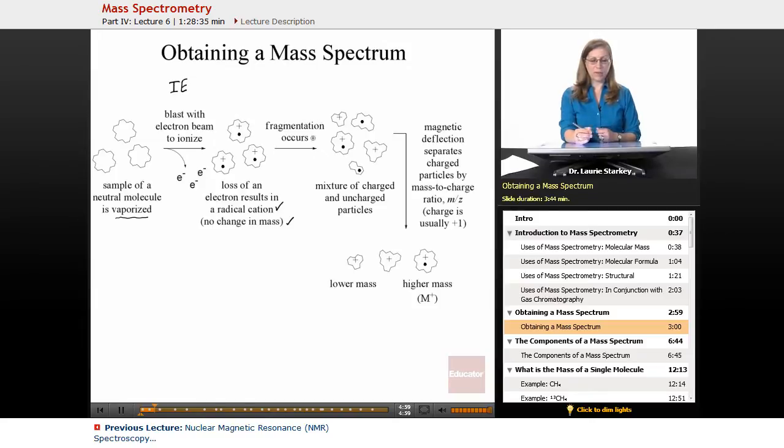But then what happens is there's a very high energy environment and so fragmentation occurs. So what happens is these molecules break apart one way or another to split up into radicals and cations. So we're going to get some fragments that are cations, some fragments that are radicals. We're going to get a mixture then of both charged and uncharged particles.